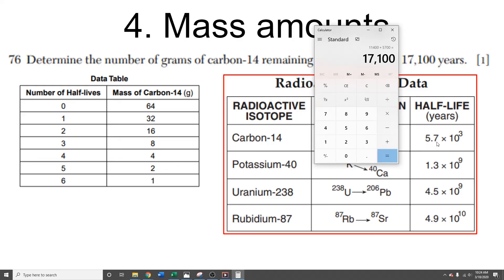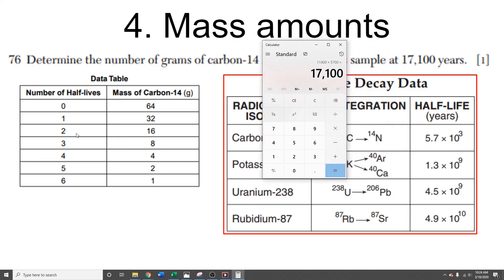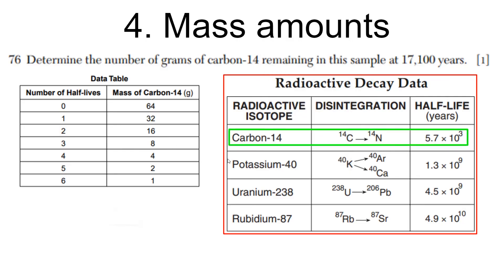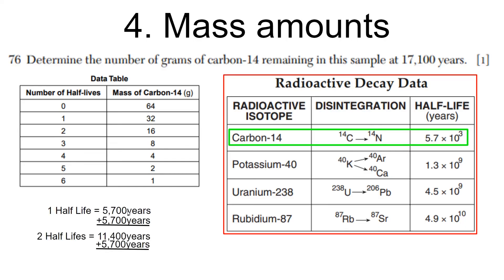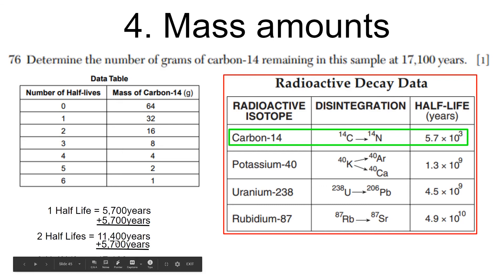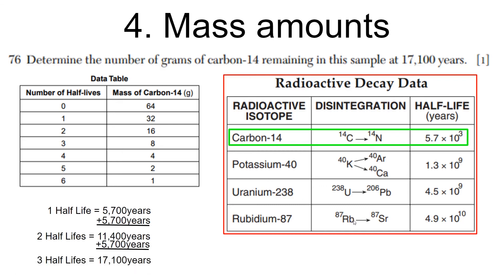Three times 5,700 years equals 17,100. Go to the number of half-lives — we have three. One half-life, two half-lives, three half-lives — read across, and there are eight grams of carbon left.